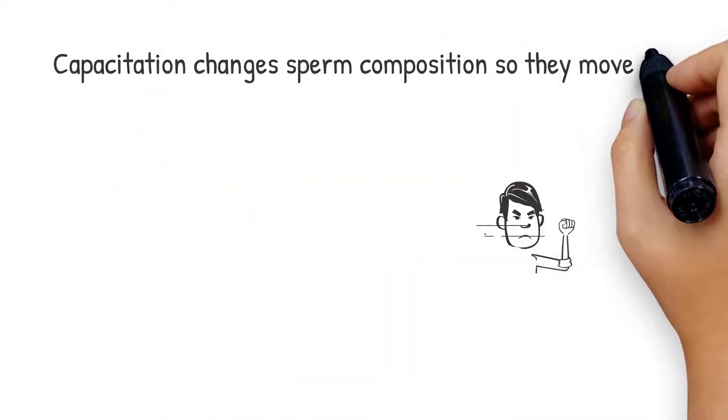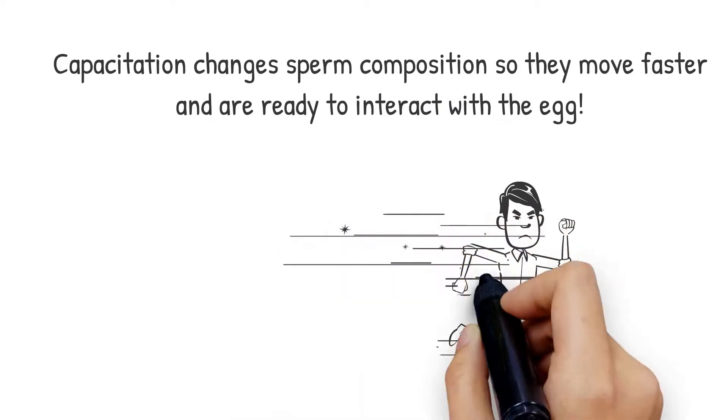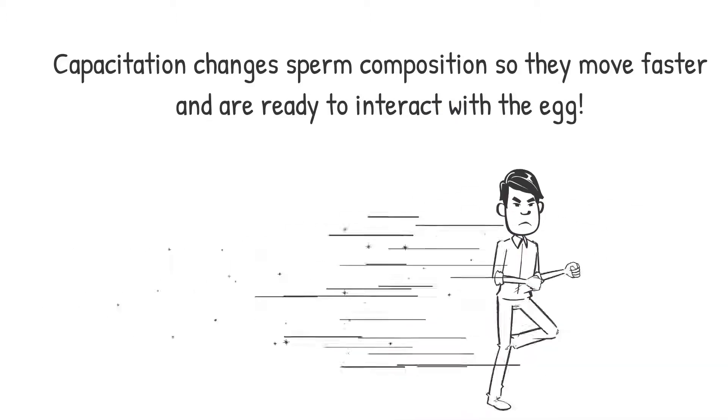Capacitation causes a series of changes in sperm's biochemical composition and structure such that they develop increased motility and are prepared for interactions with the egg at fertilization.